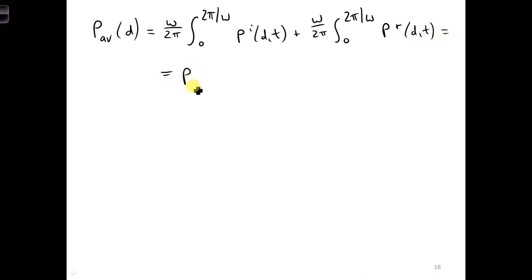And we will call that P time average incident power plus the time average reflected power. And after you plug in the two expressions we have for the instantaneous and the reflected power and we simplify, we'll get the following.